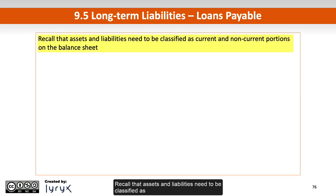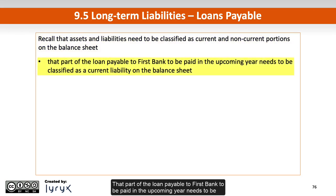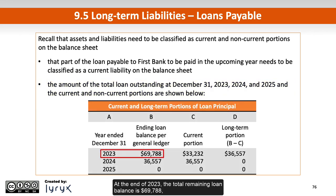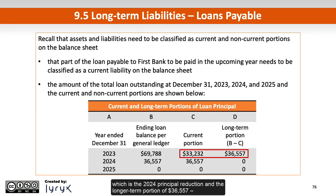Recall that assets and liabilities need to be classified as current and non-current portions on the balance sheet. That part of the loan payable to First Bank to be paid in the upcoming year needs to be classified as a current liability. The amount of the total loan outstanding at December 31, 2023, 2024, and 2025, and the current and non-current portions, are shown below. At the end of 2023, the total remaining loan balance is $69,788, and that must be separated into the current portion of $33,232 — which is the 2024 principal reduction — and the longer-term portion of $36,557, the principal reduction for 2025.